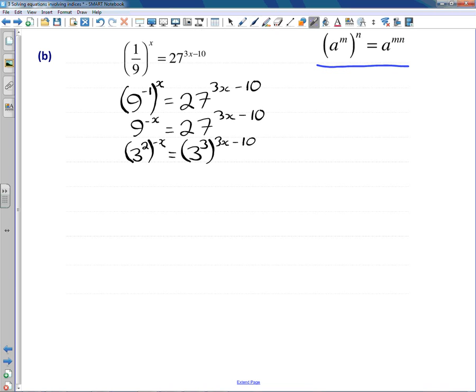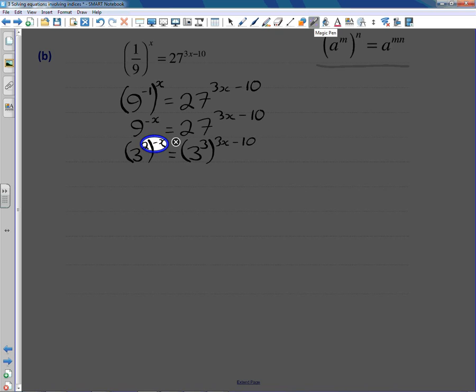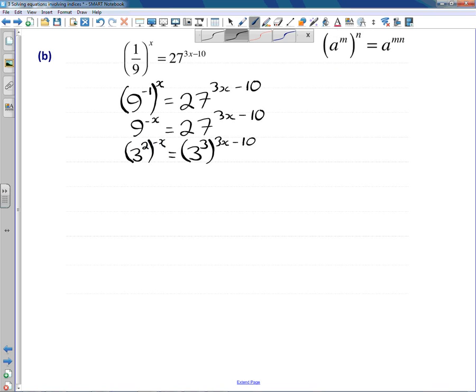So here, multiplying those powers together, we've got 3 to the minus 2x. And on the right-hand side, we've got to be careful here because we're going to multiply these powers together.